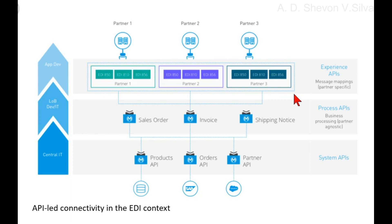The Experience API layer is designed for consumption by a specific end-user app or device that will be exposed to partners. Using Anypoint Partner Manager, a partner profile can be created from a template and reused from partner one to partner two. If a new partner requires similar B2B or EDI formats, for example EDI 850 via AS2, this will be exposed to partners via a web channel or portal.